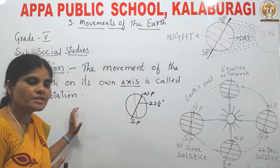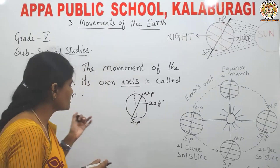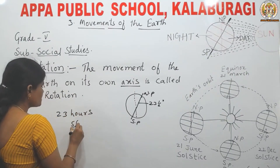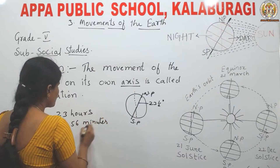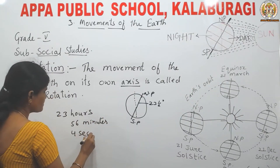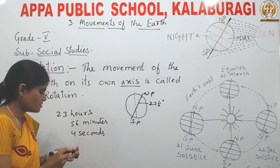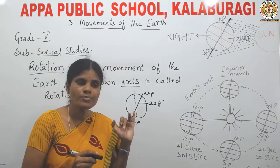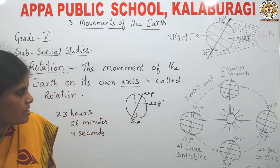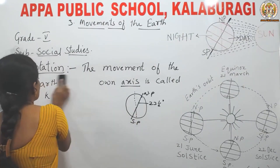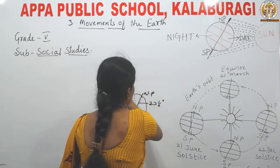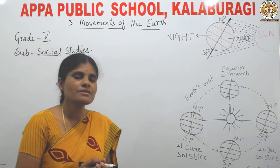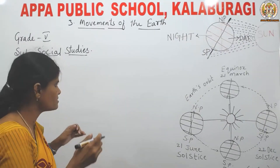How much time does the earth take to complete one rotation? The earth takes 23 hours, 56 minutes and 4 seconds to complete one rotation. Daily we see the sunrise and setting of the sun. The sun rises in the east and the sun sets in the west.